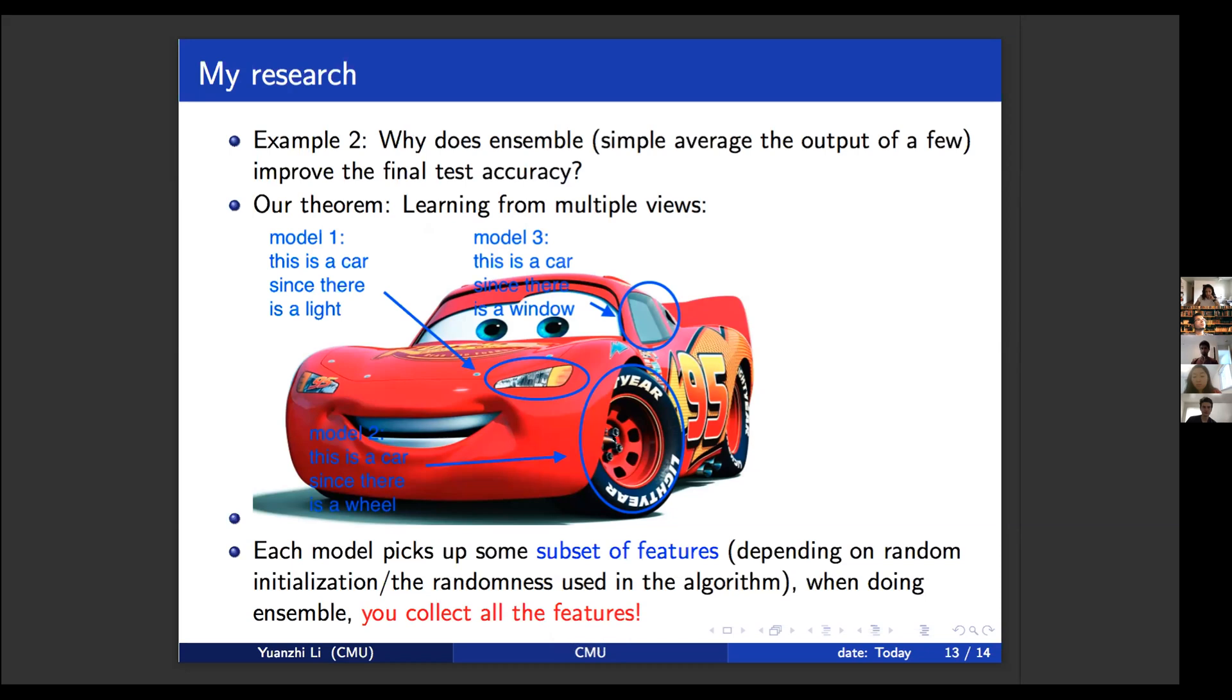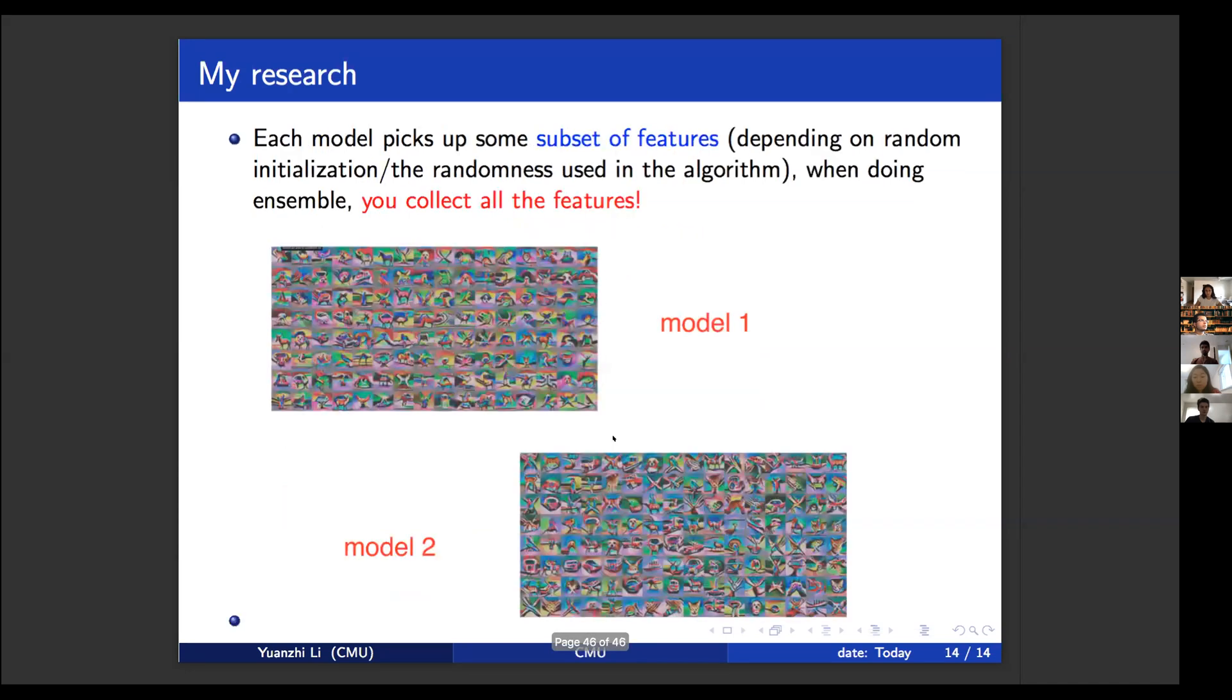So in this case, each model typically picks some subset of the features, depending on the random initialization or the randomness in the algorithm. But you have some very weird data probably appearing in some weird position that you don't get to see all of the features. For example, you have a car that only shows the rear view. So using the light as a feature is not going to classify correctly. So when doing ensemble, you actually collect all the features to learn. For example, you have this model one, you have this model two, and you combine the outputs of both. We have developed formal theory showing how you actually combine all the features in ensemble. And then we also ran a very long sequence of experiments justifying that the power of the ensemble really comes from the multi-view of the data.